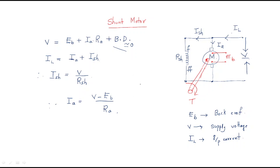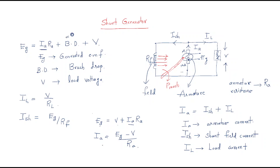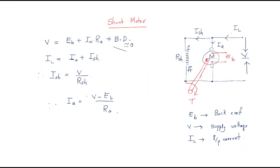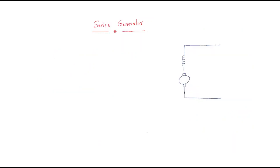From these equations we can find the armature current. This is about the DC shunt motor. Just observe: for the DC generator, the generated EMF equals voltage plus drop, whereas for the shunt motor, the armature current and shunt current have different values. This is the difference between the shunt generator and the shunt motor.